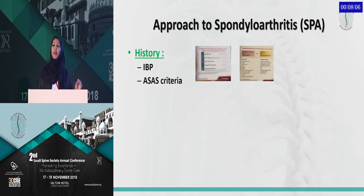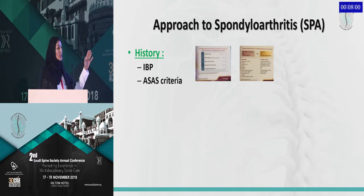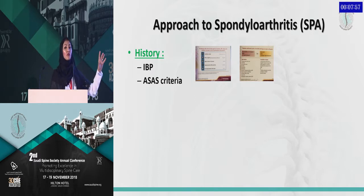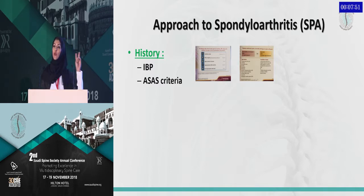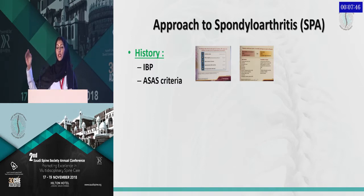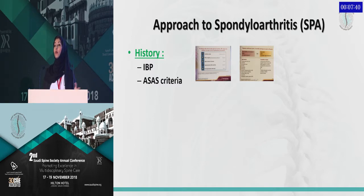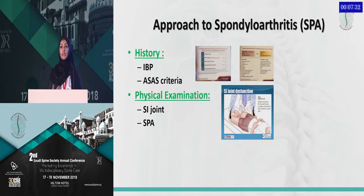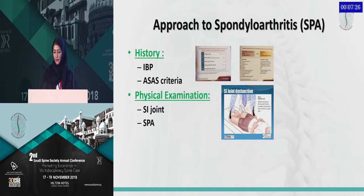For ASAS, we have 10 questions. I always teach my medical students and trainees that you must ask these 10 questions to the patient. I know it's difficult to memorize, so there are two pamphlets available at the Saudi Society of Rheumatology booth. Please take one for the inflammatory back pain and ASAS criteria, and I recommend keeping them in your pocket during clinic. Physical examination includes examination of the SI joint and the SPOT criteria, which is beyond the scope of this lecture.